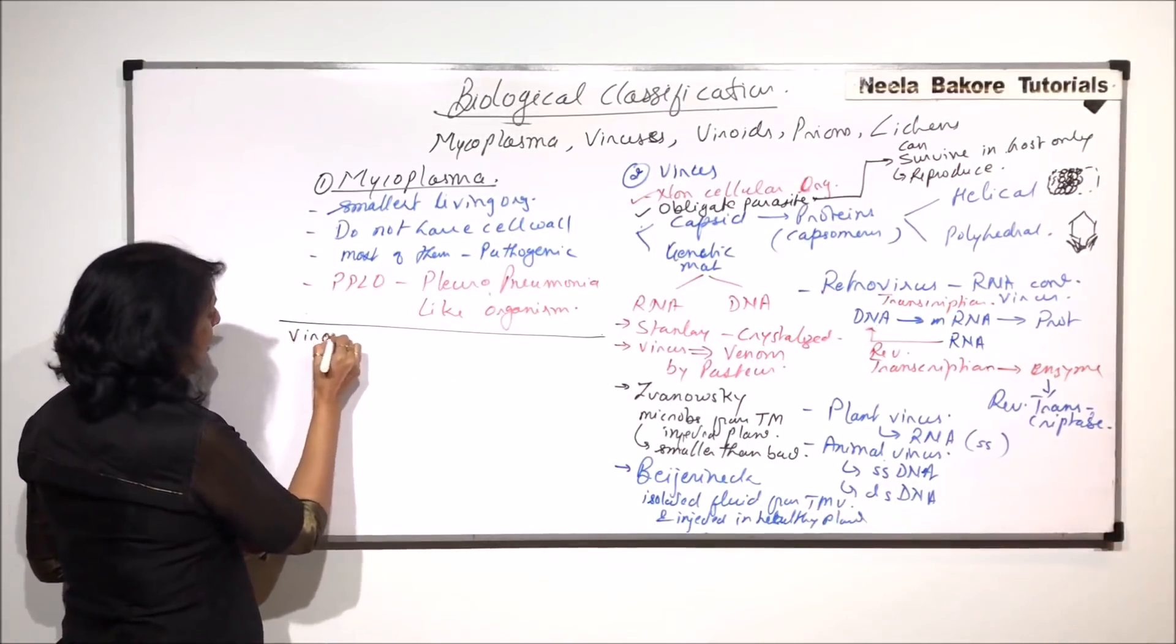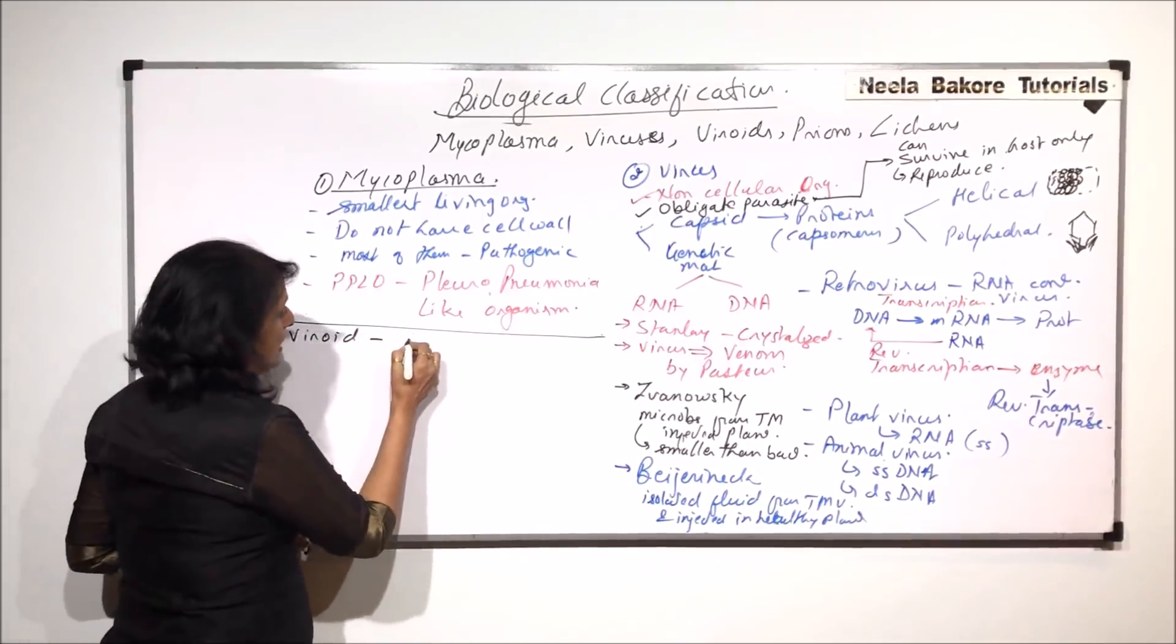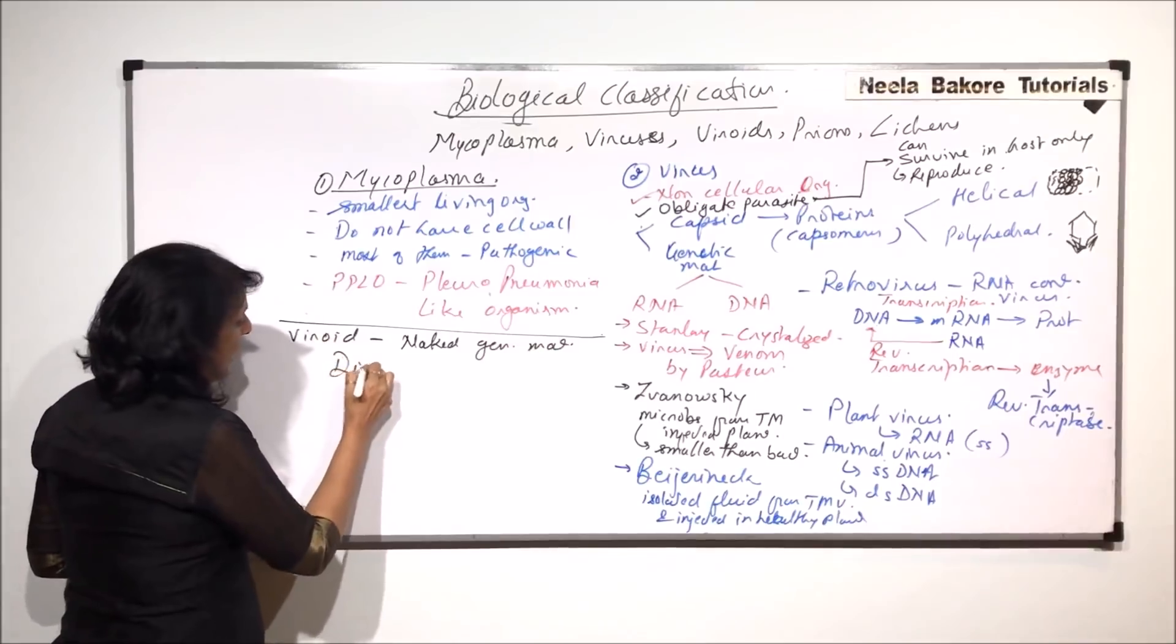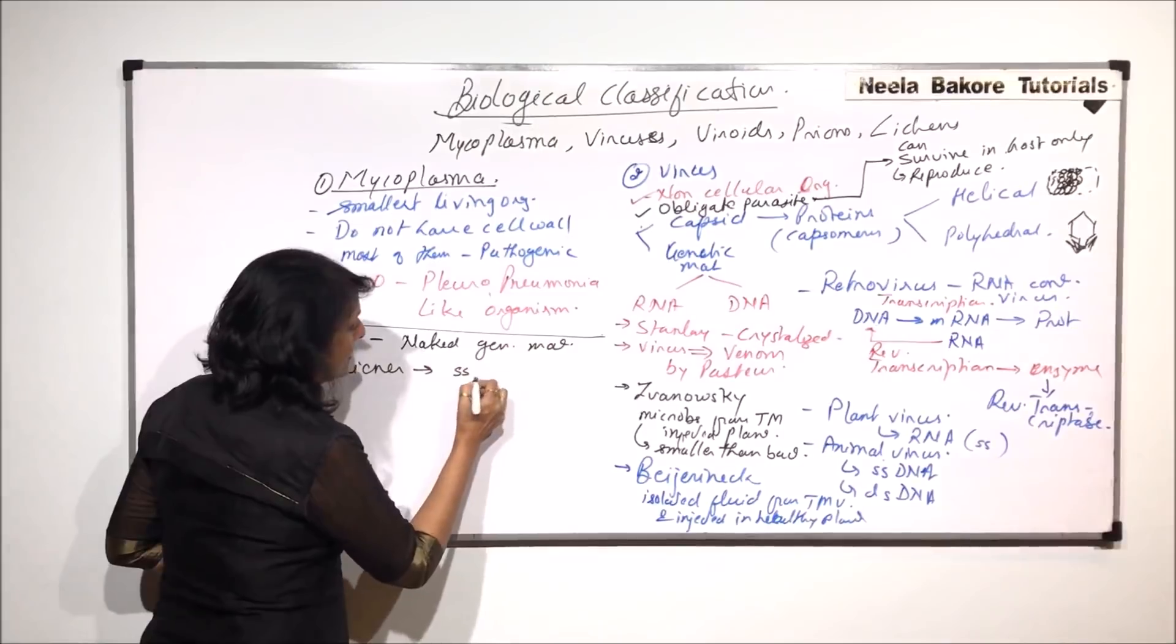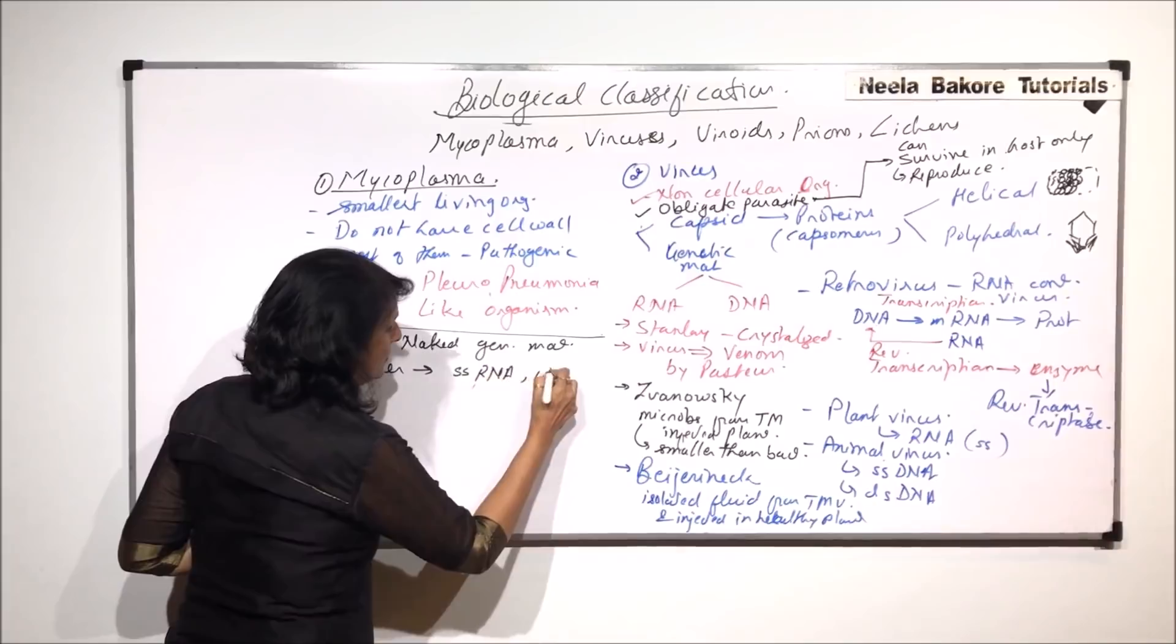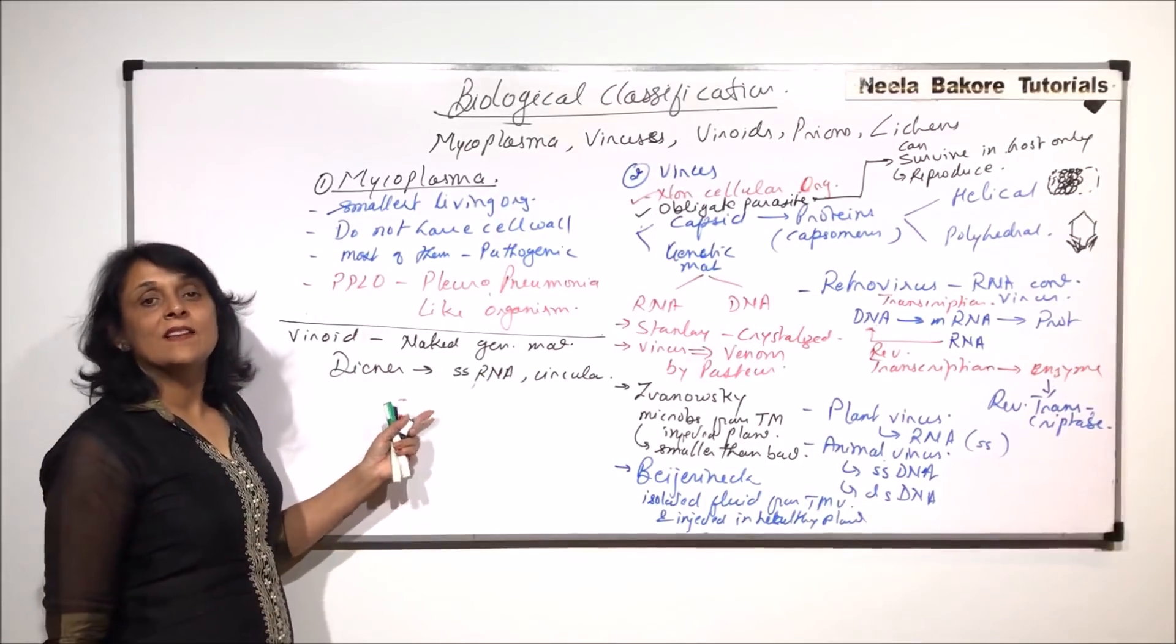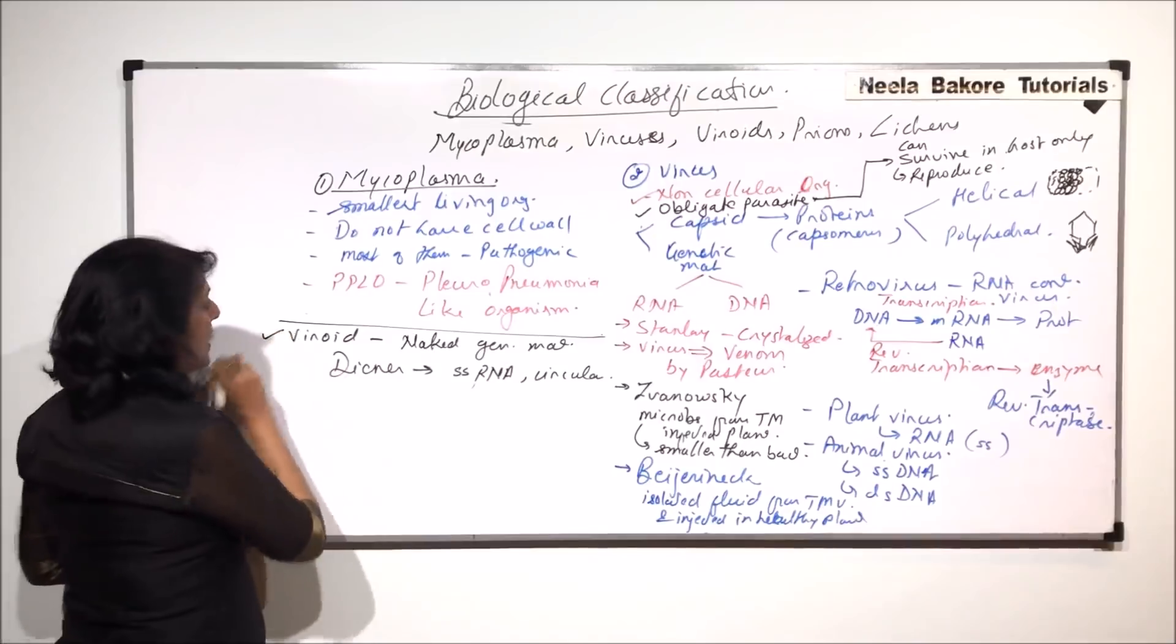Now let us come to viroids. Viroid is nothing but naked genetic material. Diener isolated a single-stranded circular RNA and found this was responsible for causing a disease in tubers or potatoes. So they are called viroids.